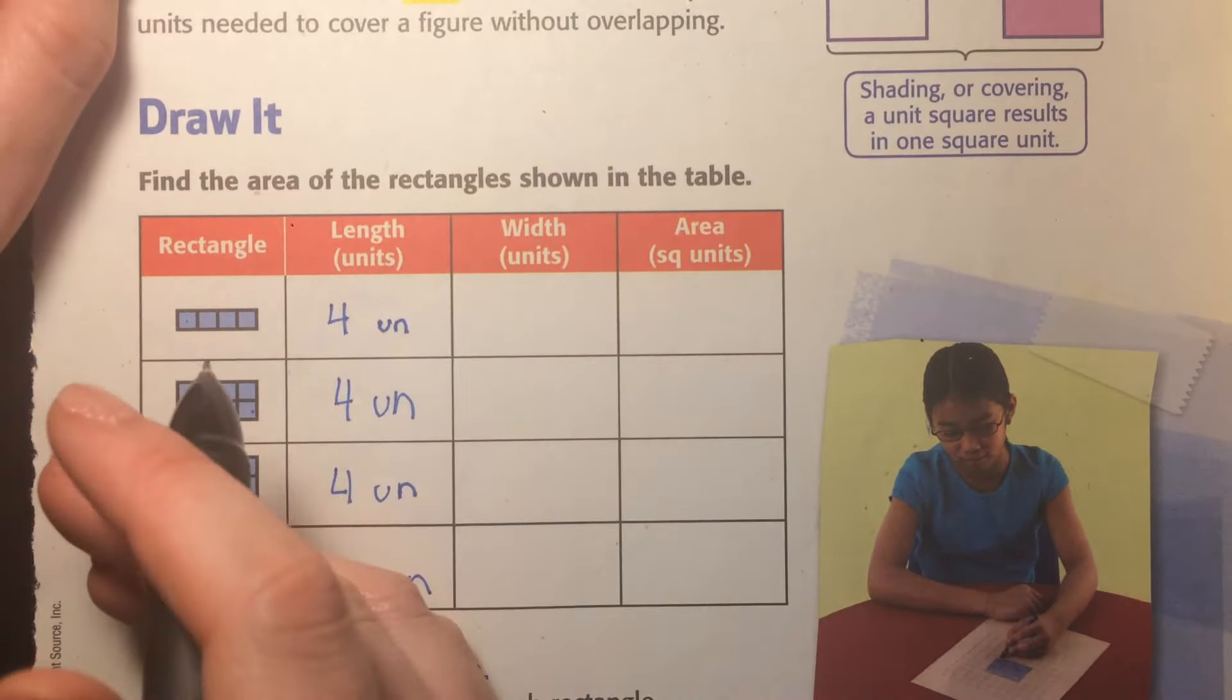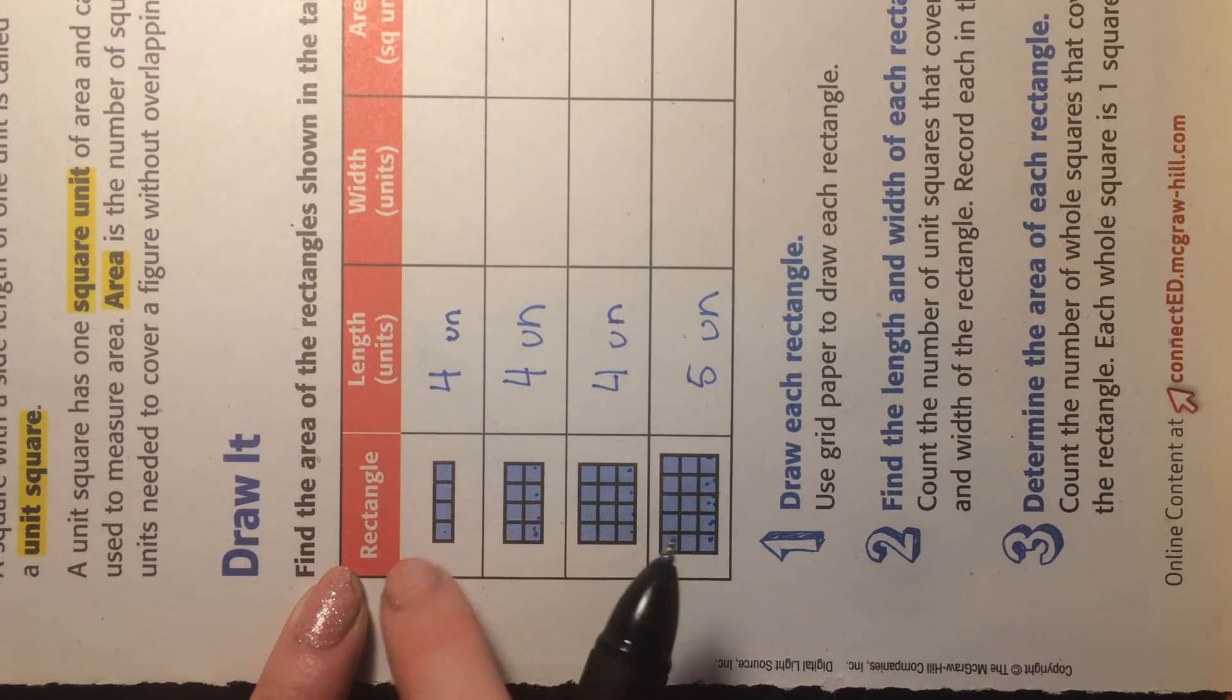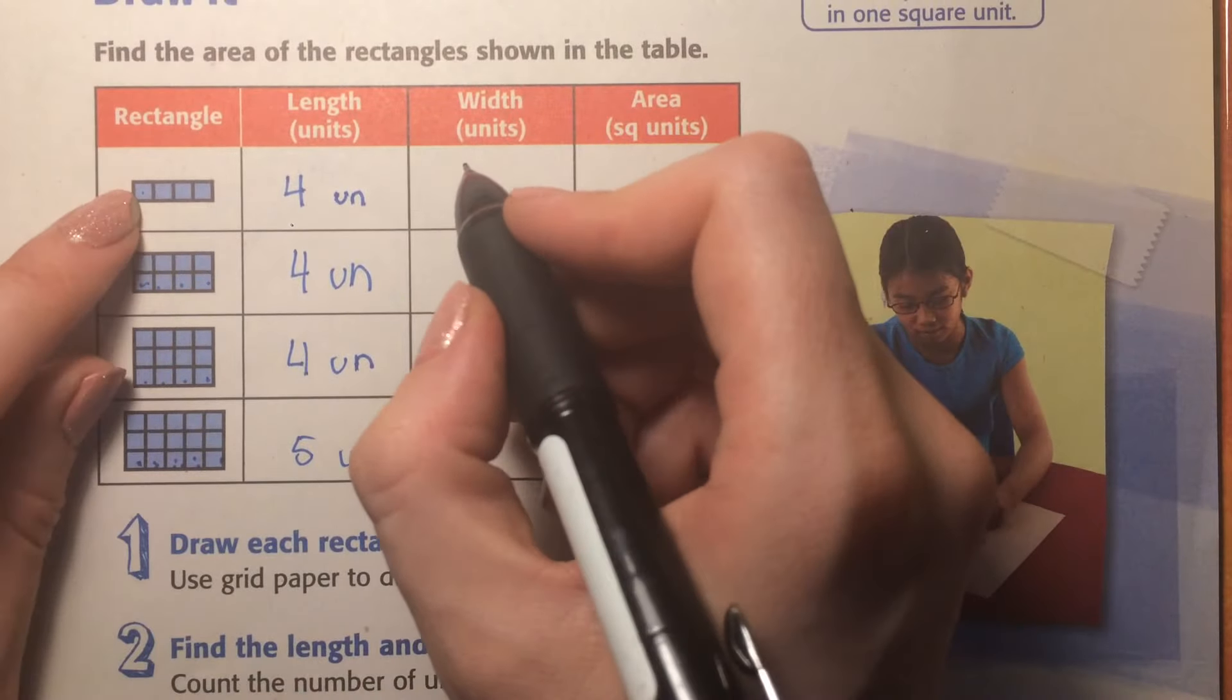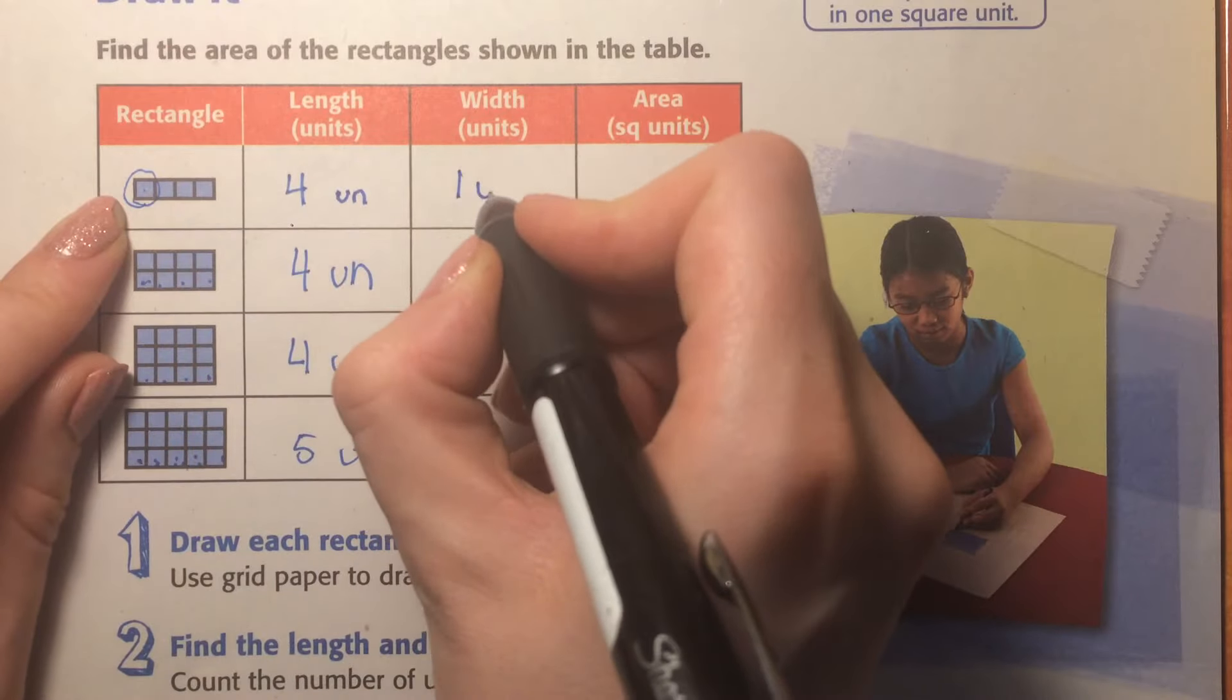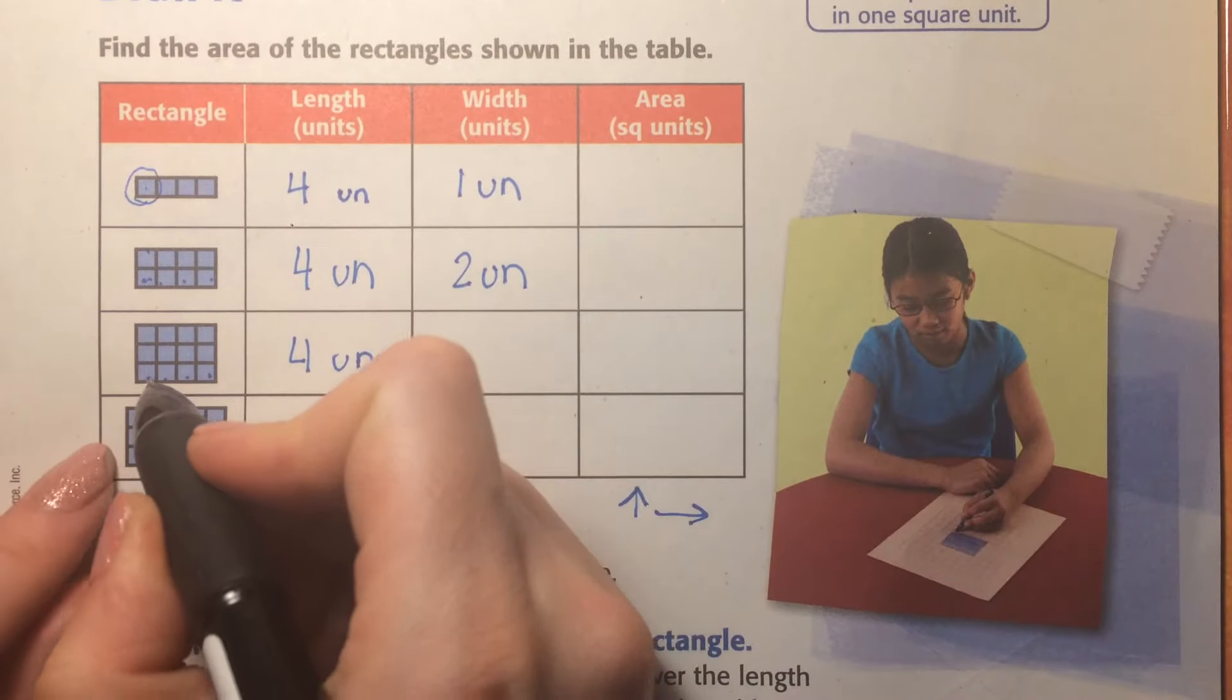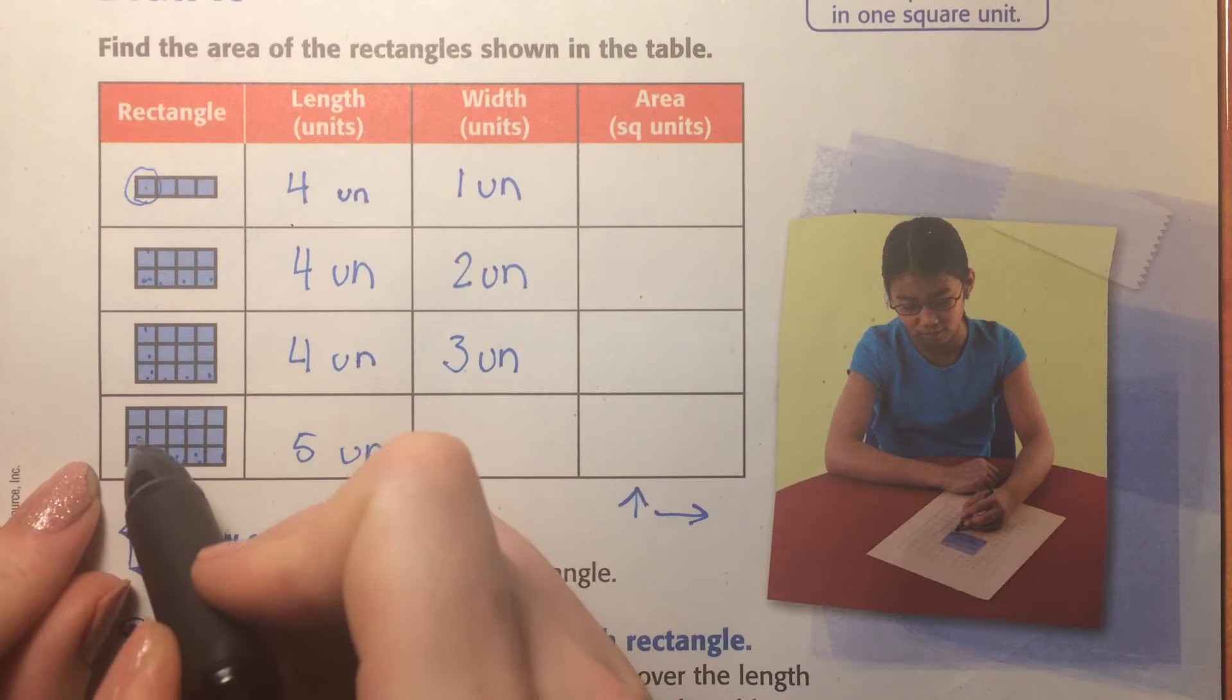Now, width. That's normally what we talk about, it's the up and down. Now, again, it doesn't really matter because I could flip it over and then this one's would be the length. But generally, length is this one and width is this one. So how tall is it? It's only one tall, one unit. And this one's two units. This is one, two, three units. One, two, three units.